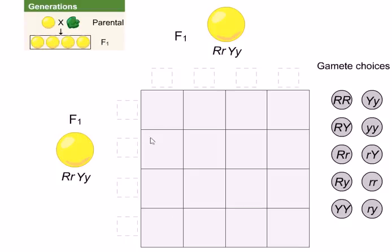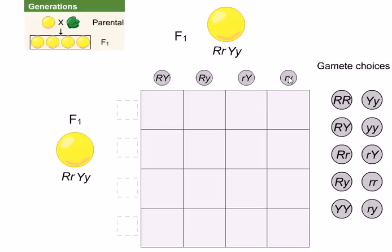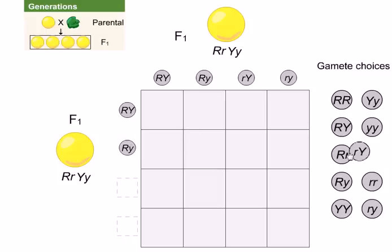We need to look for the four different combinations from each side. Caps R, caps Y is one combination; caps R, small y is another; small r, caps Y is another; and small r, small y is the fourth. Because we are crossing heterozygous plants, both sides of the Punnett square have the same four gametes: caps R caps Y, caps R small y, small r caps Y, and small r small y.